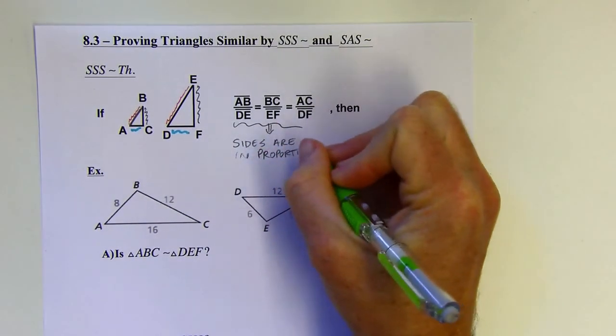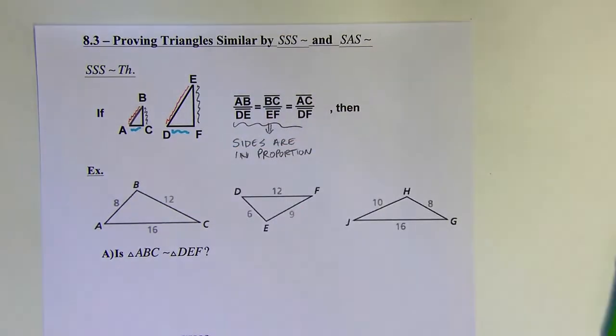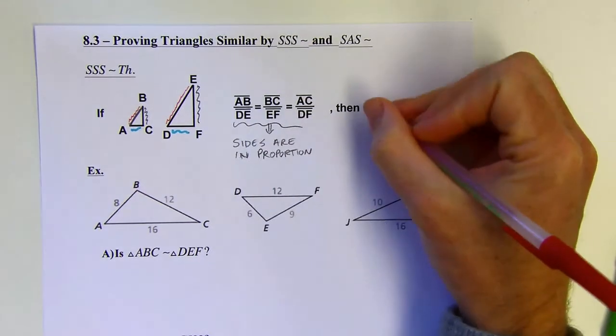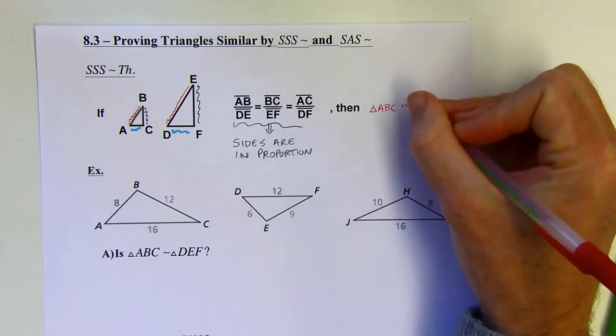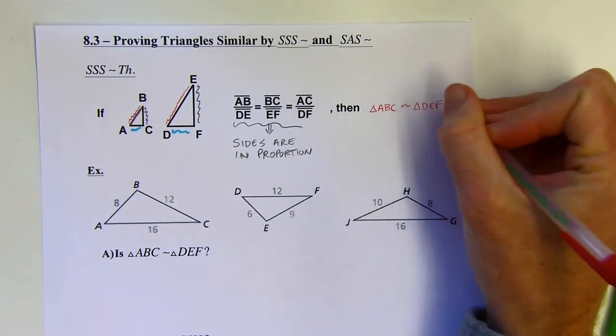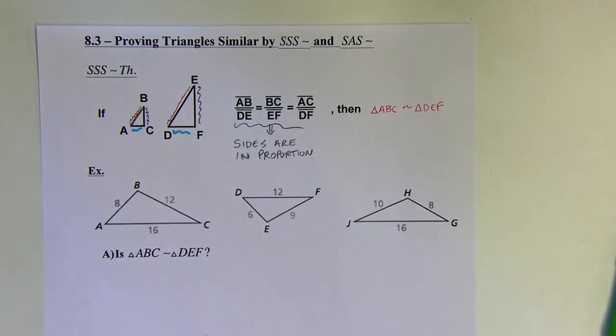When that happens, then the two triangles are going to be similar. So triangle ABC would be similar to triangle DEF. And that's the side-side-side triangle similarity theorem.